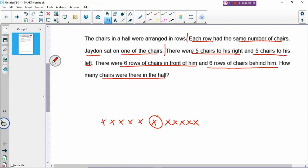There were 5 chairs to his right, 5 chairs to his left, and there were 6 rows of chairs in front of him. So you can draw a line to represent a row. So there will be 6 lines: 1, 2, 3, 4, 5, and 6. The diagram doesn't have to be very nice. Just enough to serve your function, just enough for you to solve. You don't have to make it very nice.